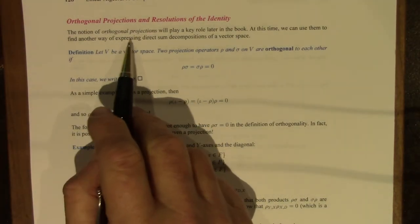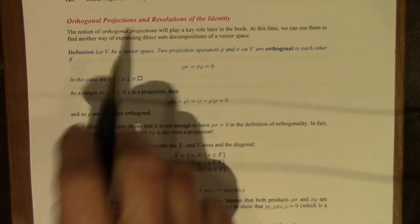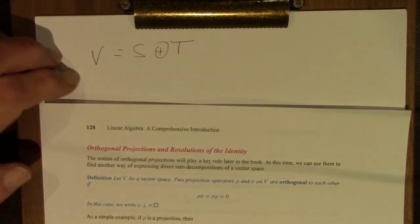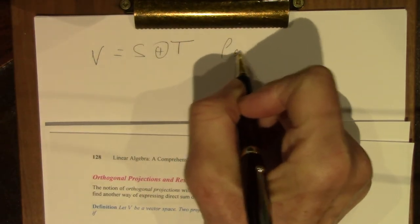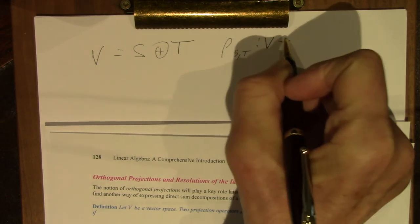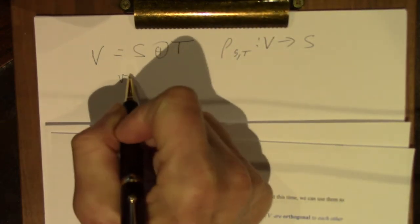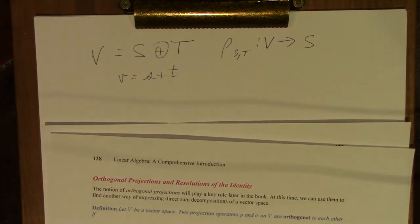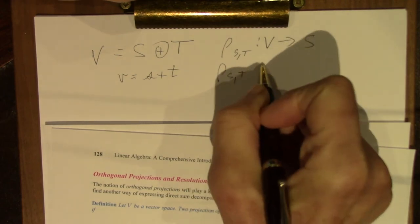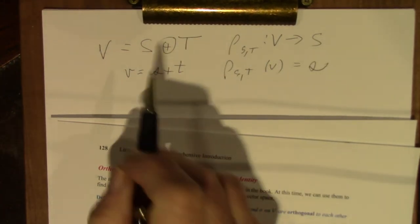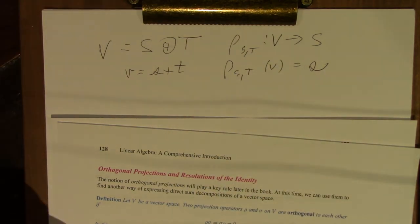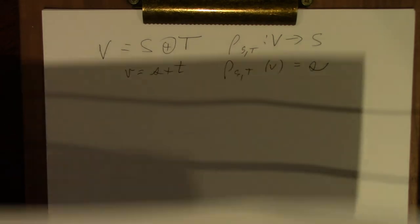So it starts with orthogonal projections and resolutions of the identity. You will recall that if we have a direct sum decomposition of a vector space, then the projection map rho_ST maps v to S. Every vector little v is a little s plus a little t. Little s belongs to the subspace capital S, and the same for t. And then rho_ST of v is s — we are projecting onto S along T. Please review that if needed, because we're going to rely heavily on projections.